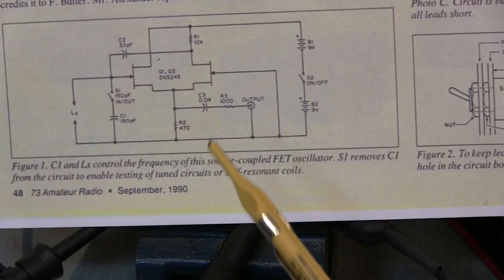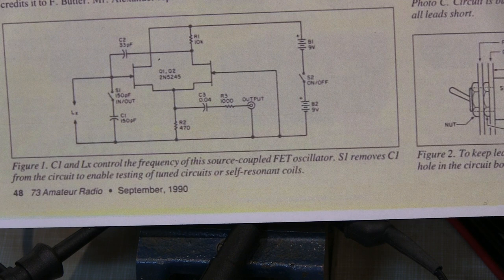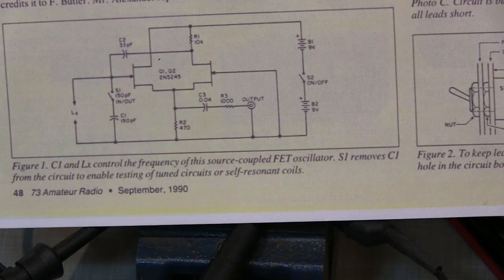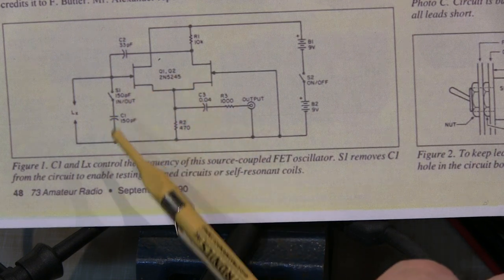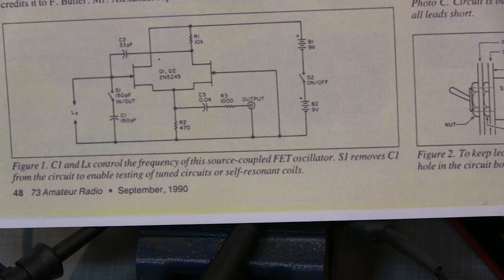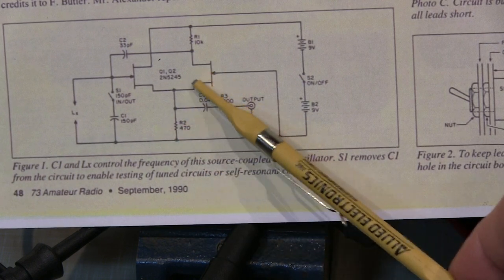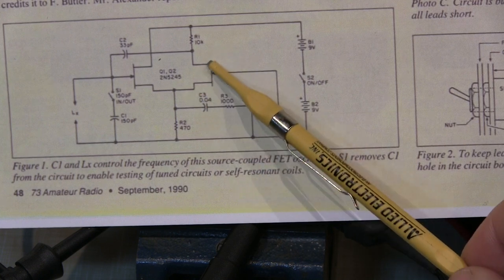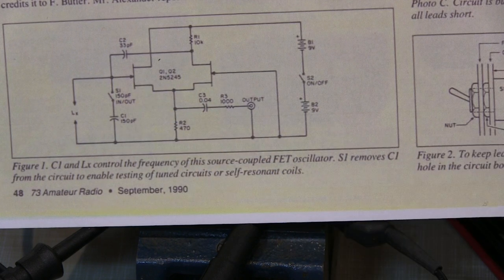Now the original circuit used a pair of 2N5245s for the source coupled pair. I didn't have any of these devices so I used a pair of J310s. The only thing that I found with the J310s is that the different IDSS and the gate source threshold voltage meant that a 470 ohm resistor was putting Q2 into its resistive region, the linear region as opposed to the saturation region. So it wasn't really working well as an oscillator.